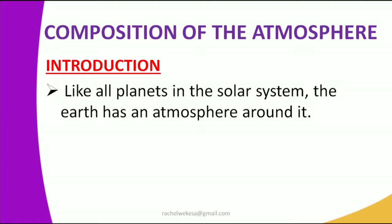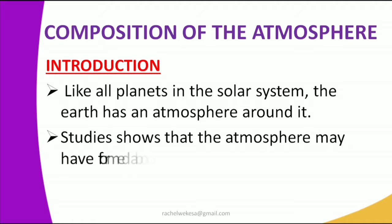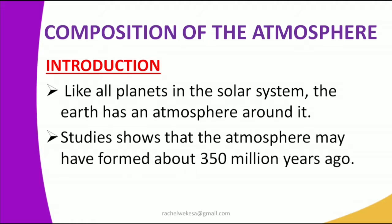In the first lessons of form 1, we looked at what a solar system is. The solar system is made up of the Earth and 9 other planets. For today we will only focus on the atmosphere.